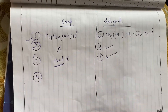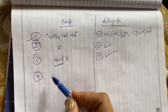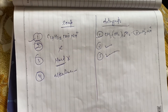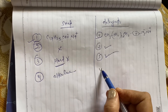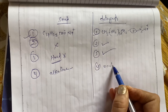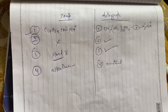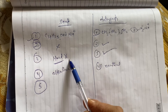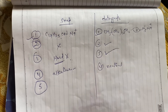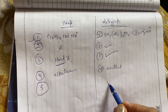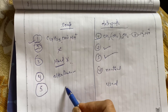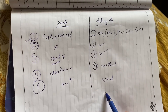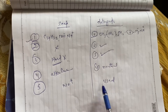Agla point: the aqueous solution of soap is alkaline, jabki detergent ka solution neutral hota hai. Ek point aur yaad rakhna — soaps cannot be used with acidic water, aur detergent aap use kar sakte ho. Detergent better cleaning agent hai, aur soap usse kam effective hai.